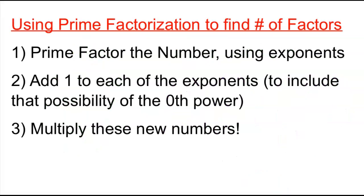So just a recap, when you're trying to use the prime factorization to find the number of factors, you would prime factor the number using exponents. You can add 1 to each of the exponents because that includes that possibility of using the 0th power, and then you can multiply these new numbers.